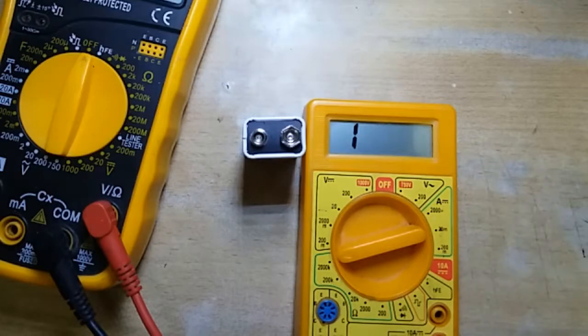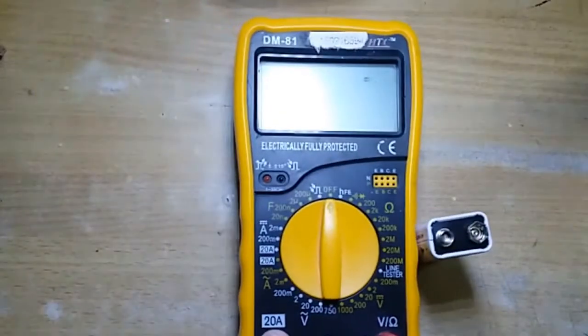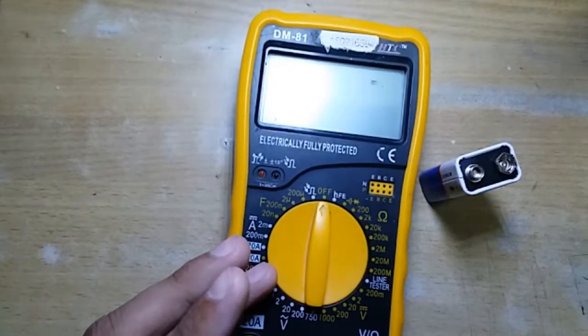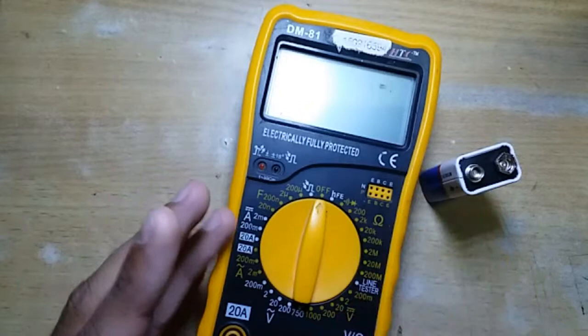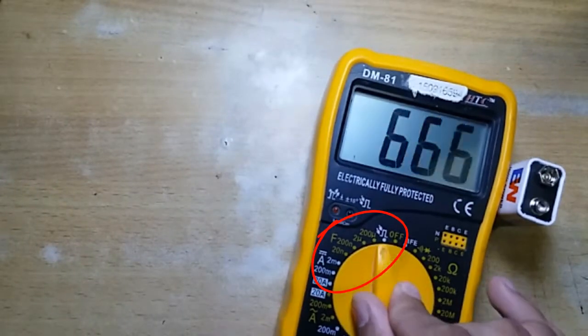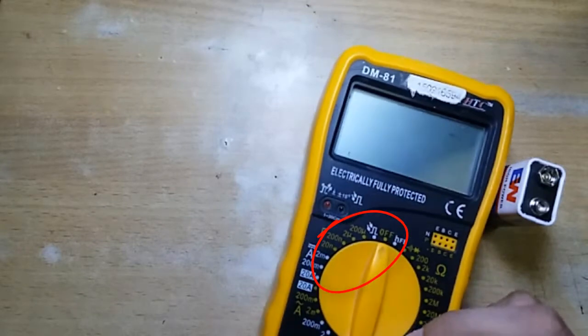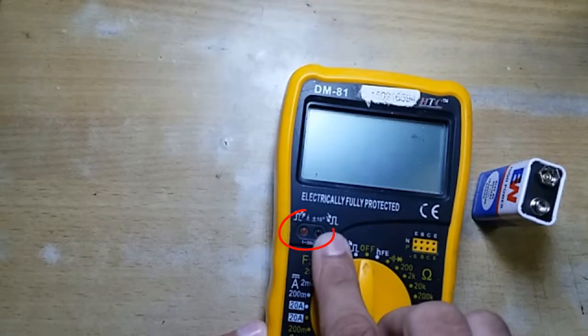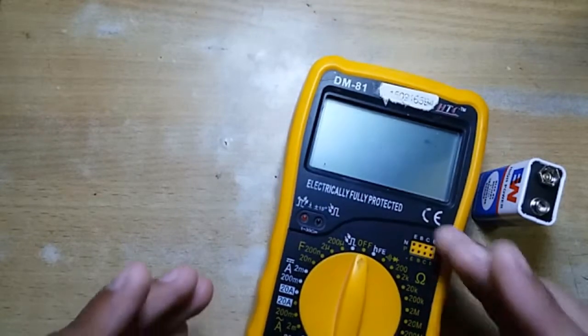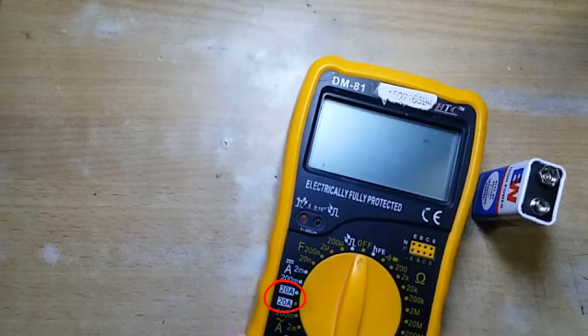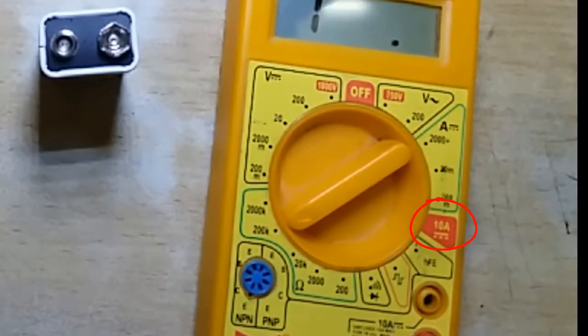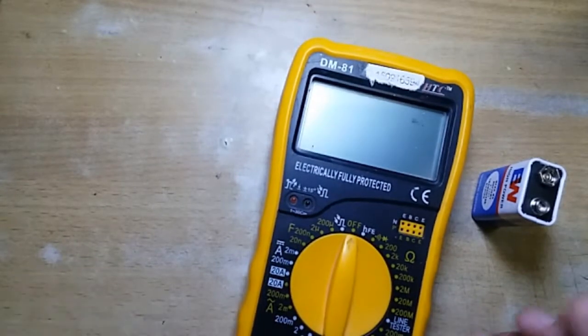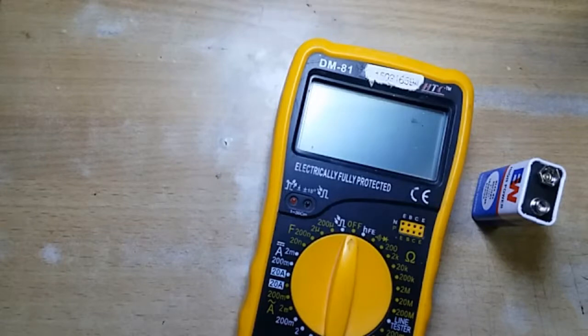Another meter for example is this DM81 from HTC. This has all the features that this cheap multimeter has with other functionalities like capacitance meter. As you can see here I can measure up to 200 microfarad with this DM81 multimeter. It also contains an infrared LED tester here. And also you can measure current up to 20 ampere max which was 10 ampere in our previous meter. And it is protected with fuse up to 20 ampere in 200 milliampere setting whether it is AC or DC.